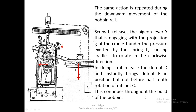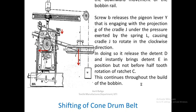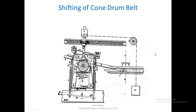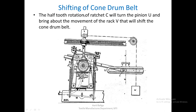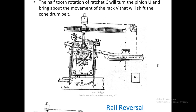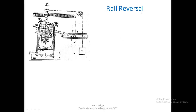This continues throughout the build of the bobbin. Continuously as the bobbin rail moves up and down, this will keep happening so that after every layer the cone drum belt is shifted because the rack moves further towards the left. The half-tooth rotation of ratchet C turns pinion U and brings about a movement of rack V that shifts the cone drum belt.